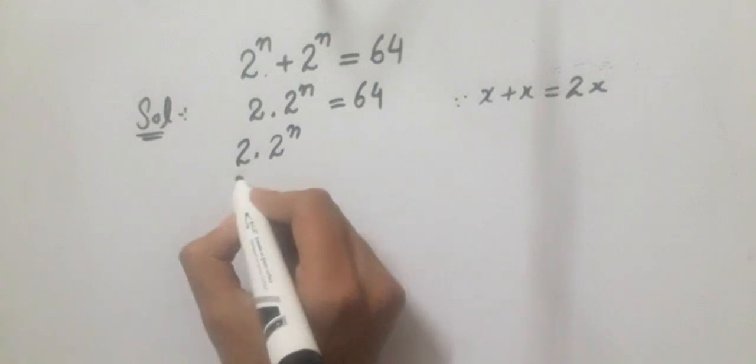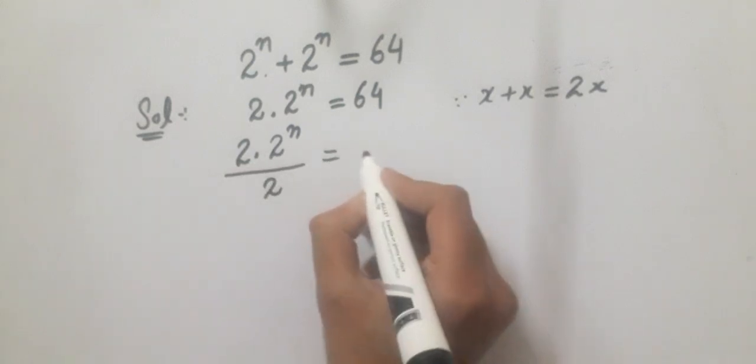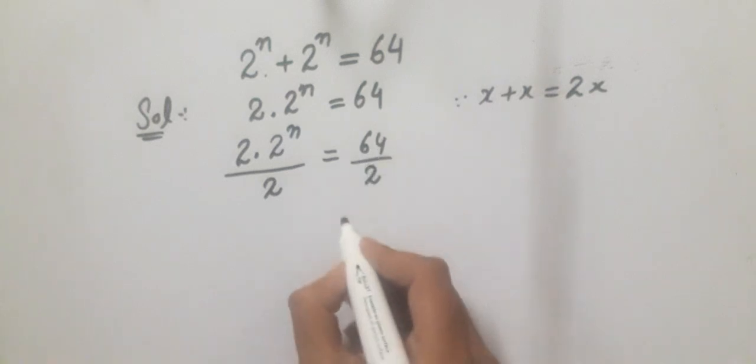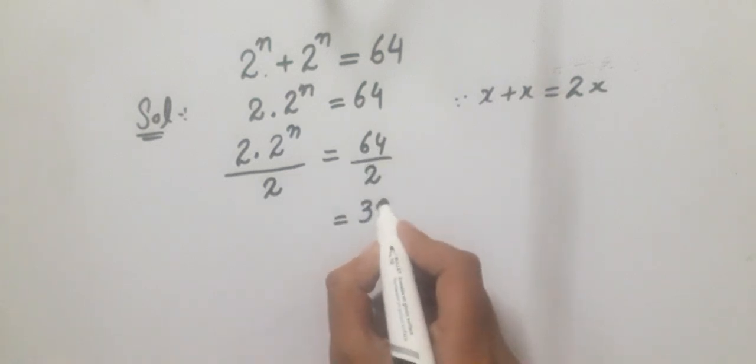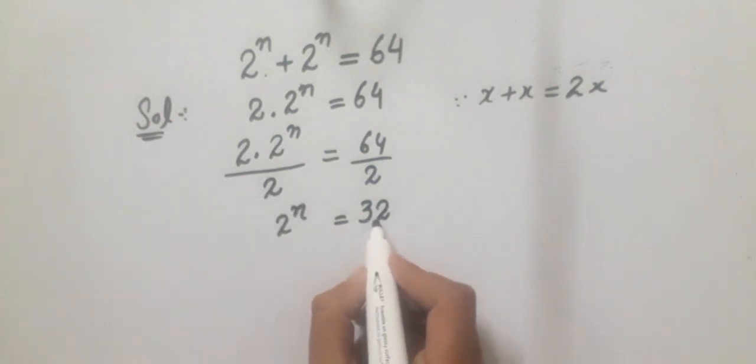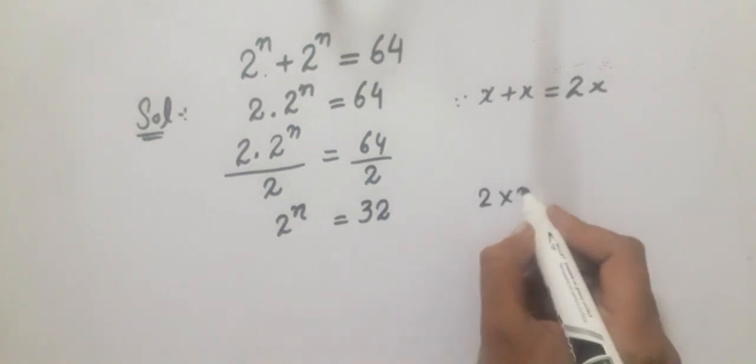So 2 into 2 raised to power n divided by 2 which is equal to 64 divided by 2, it will become 32. And 2 raised to power n, we recognize that 32 can be written as 2 × 2 × 2 × 2 × 2.